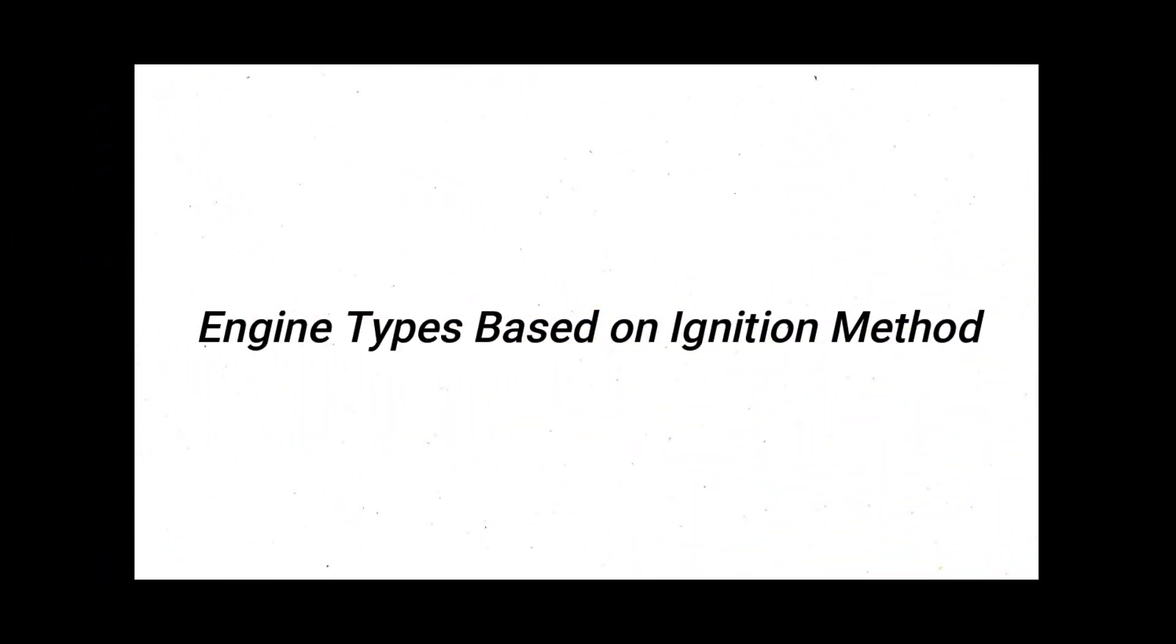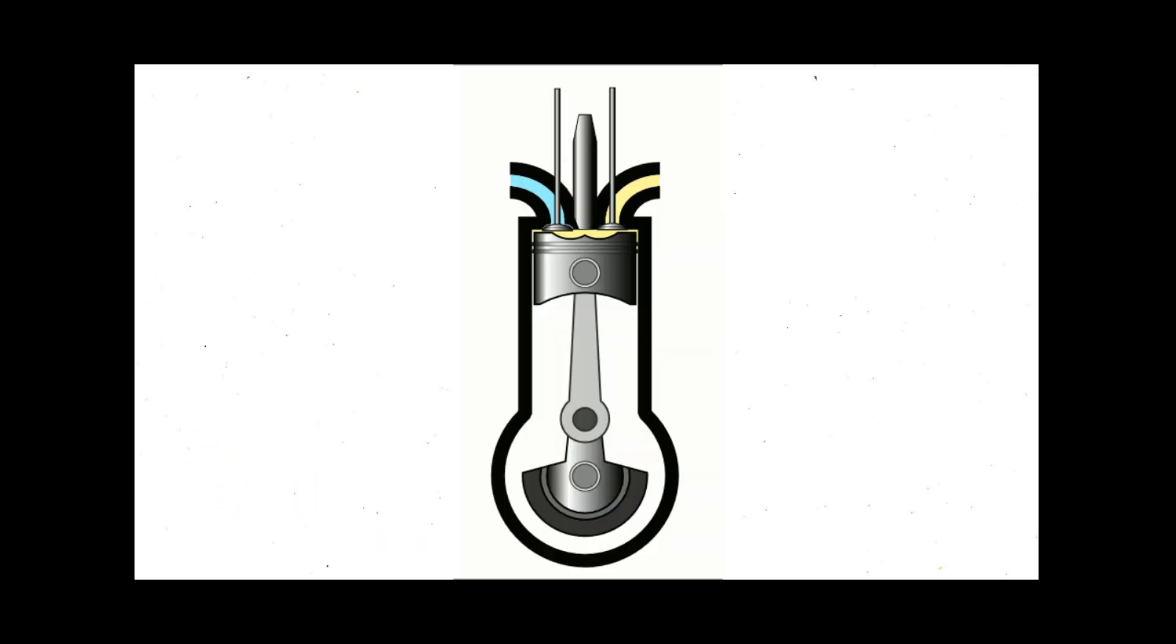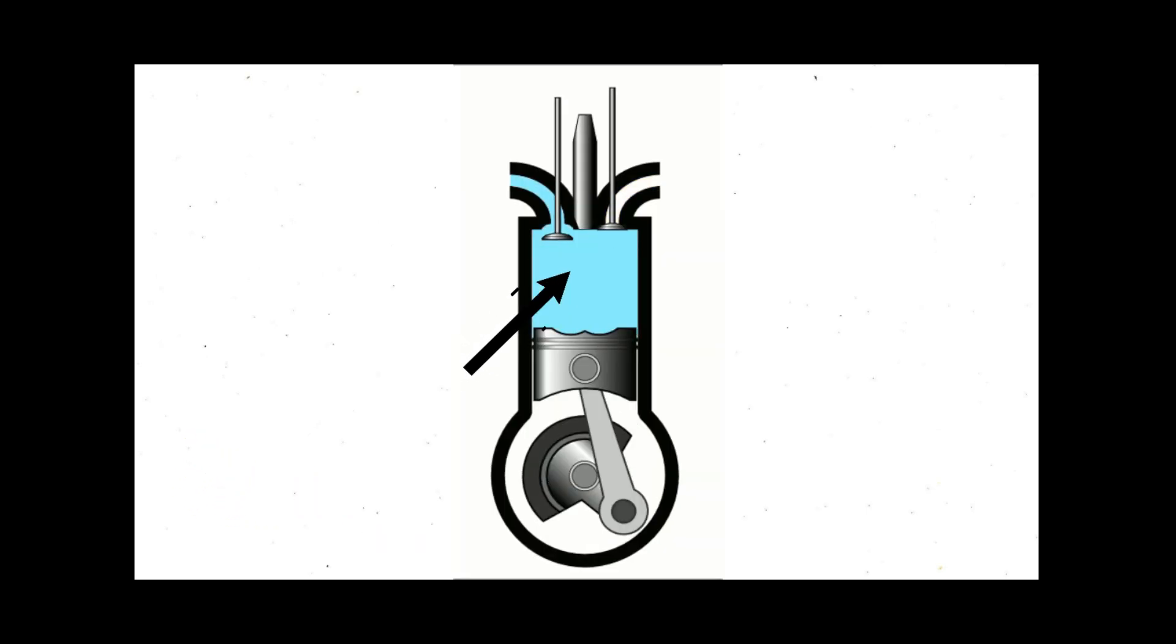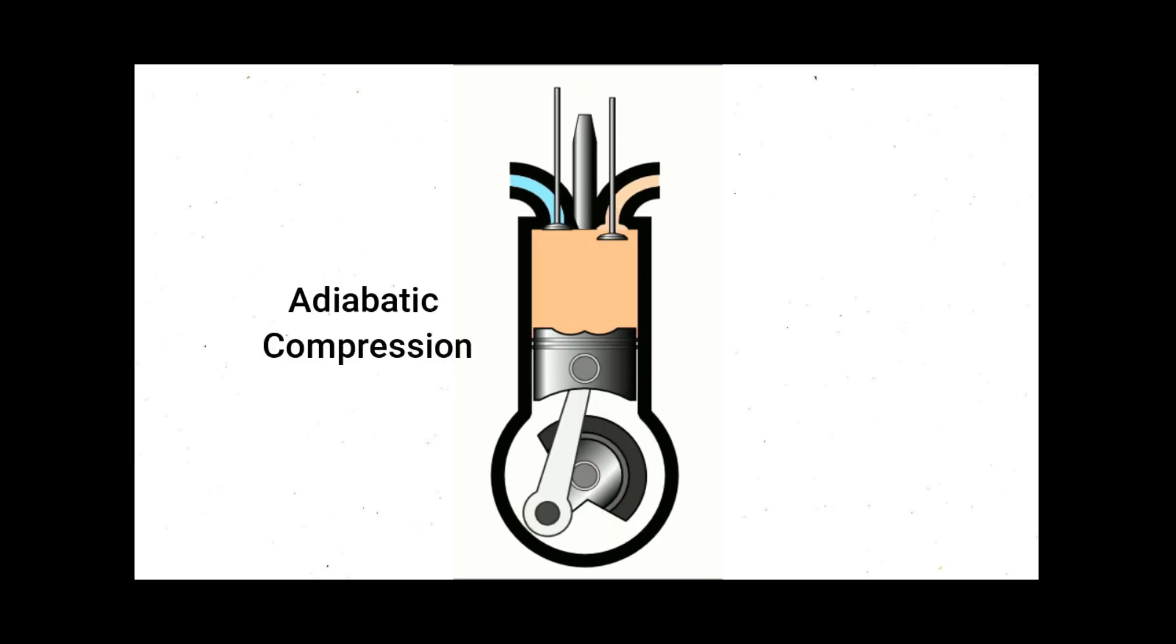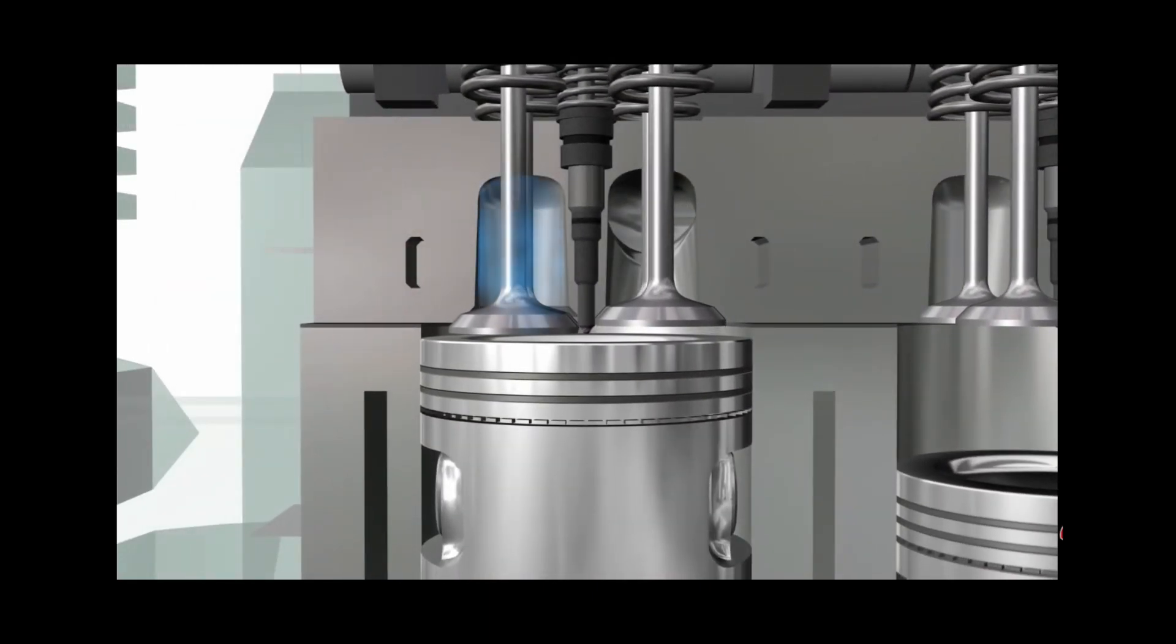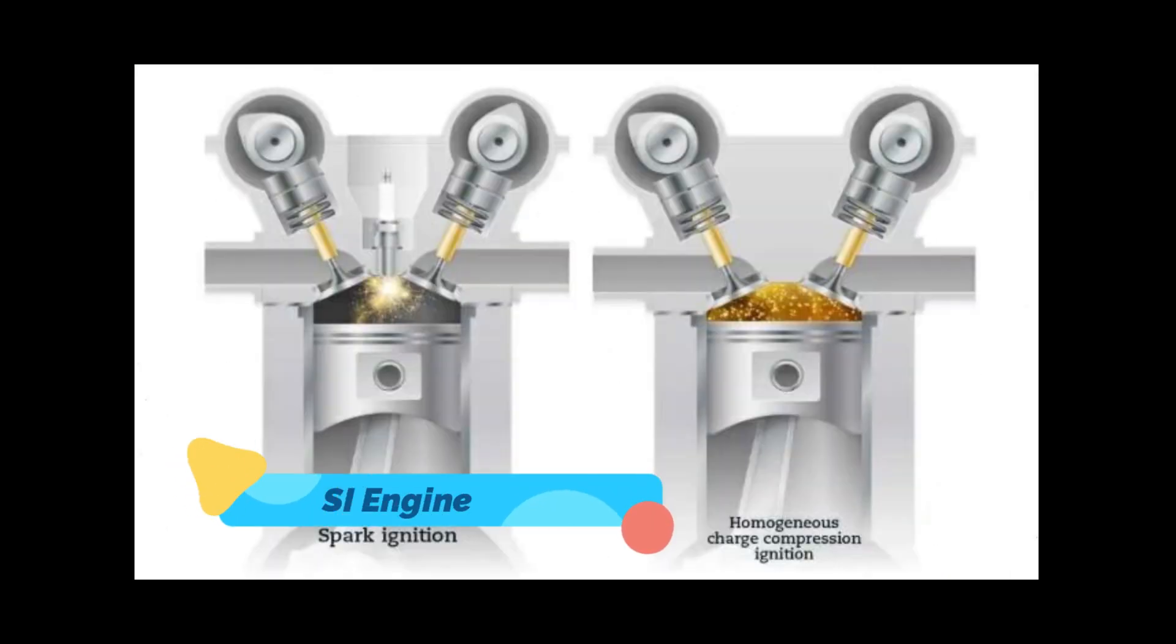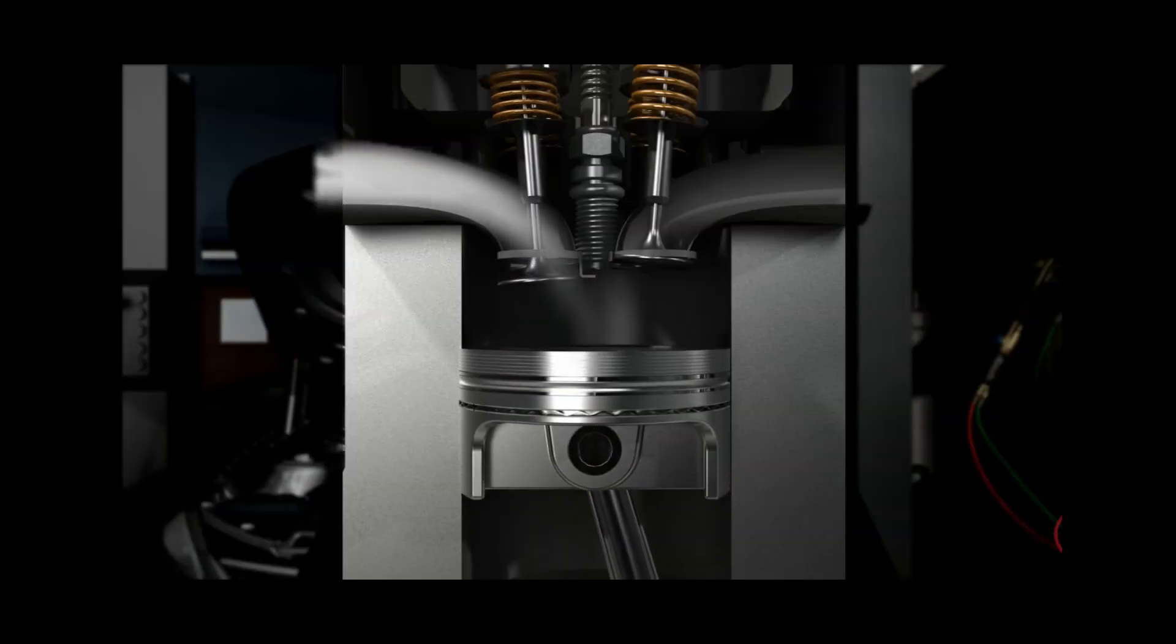In a compression ignition engine, the combustion of fuel in the chamber is triggered by the high temperatures achieved by gas or air due to adiabatic compression. Diesel engines are a perfect example of a compression ignition engine since it works only by compressing the air.